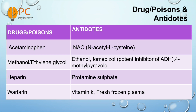Methyl pyrazole is also an antidote for methanol poisoning. And for heparin overdose, we can use protamine sulfate as antidote. For warfarin, we can use vitamin K or fresh frozen plasma as antidote.